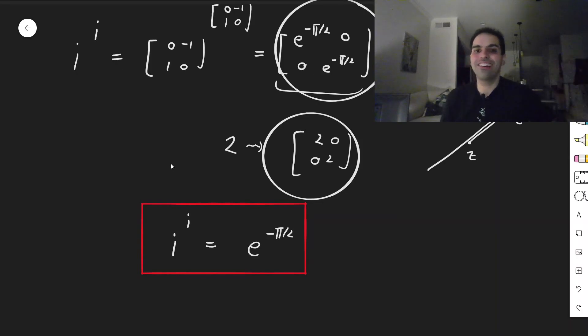So now, using linear algebra, we have officially shown that i to the i is E to the minus pi over 2, with, again, no calculus whatsoever, just linear algebra. All right, I hope you liked this. If you want to see more math, please make sure to subscribe to my channel. Thank you very much.